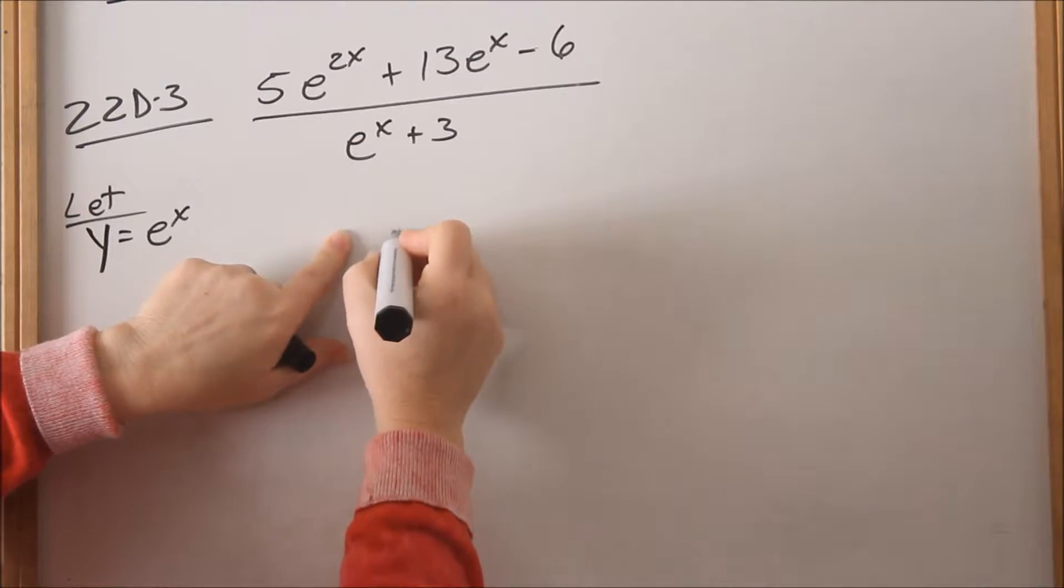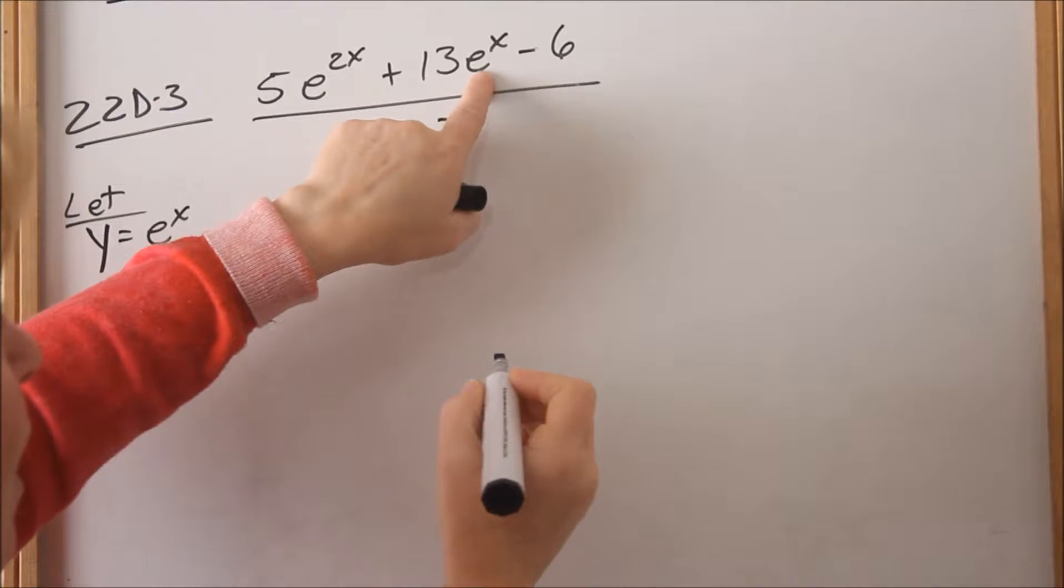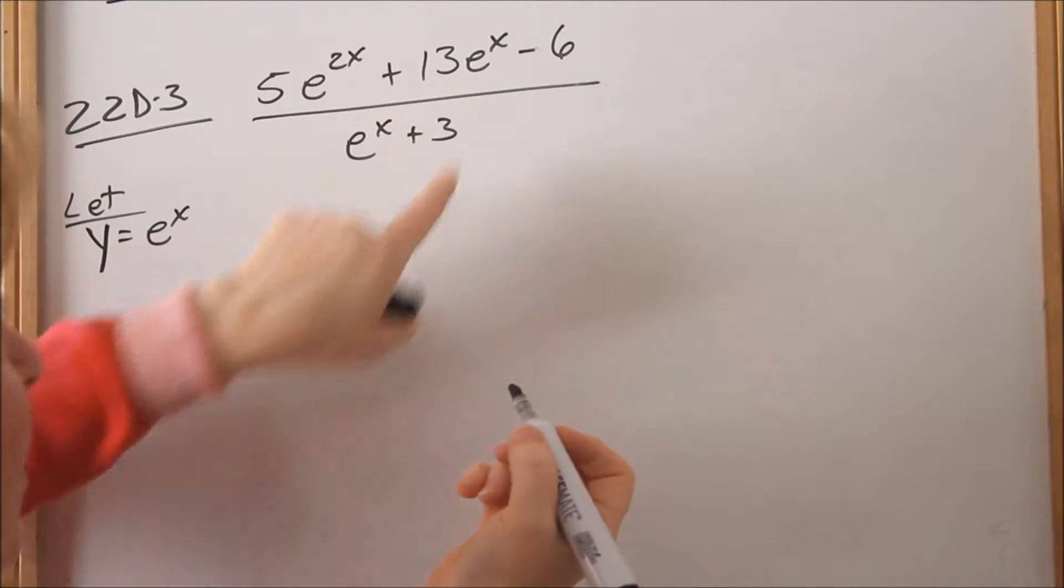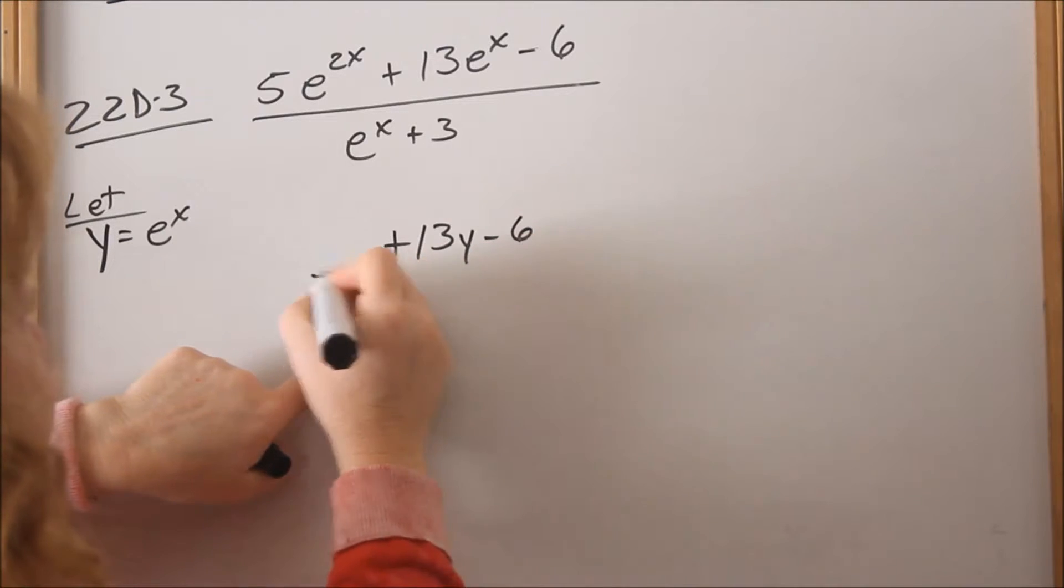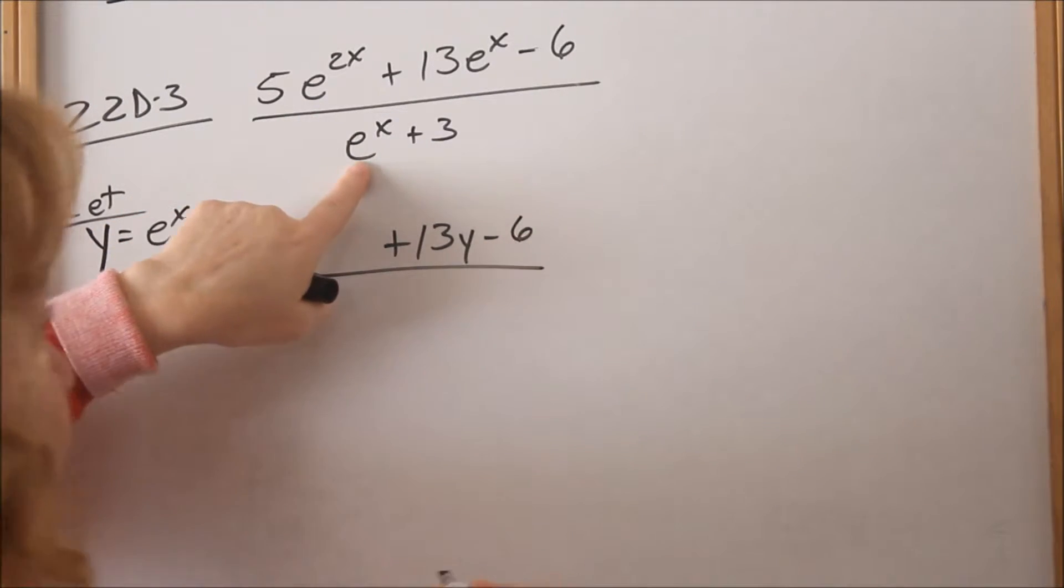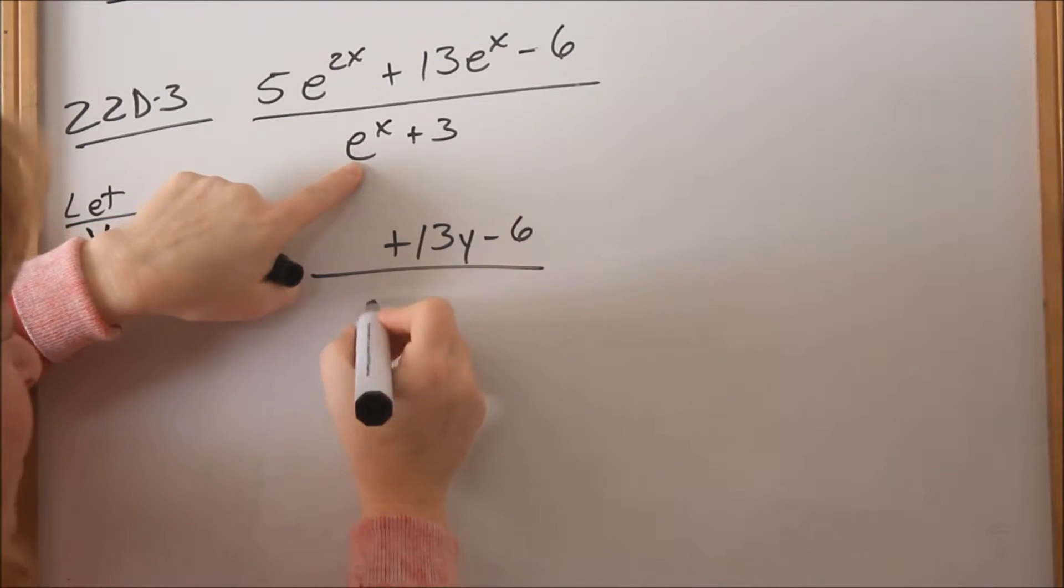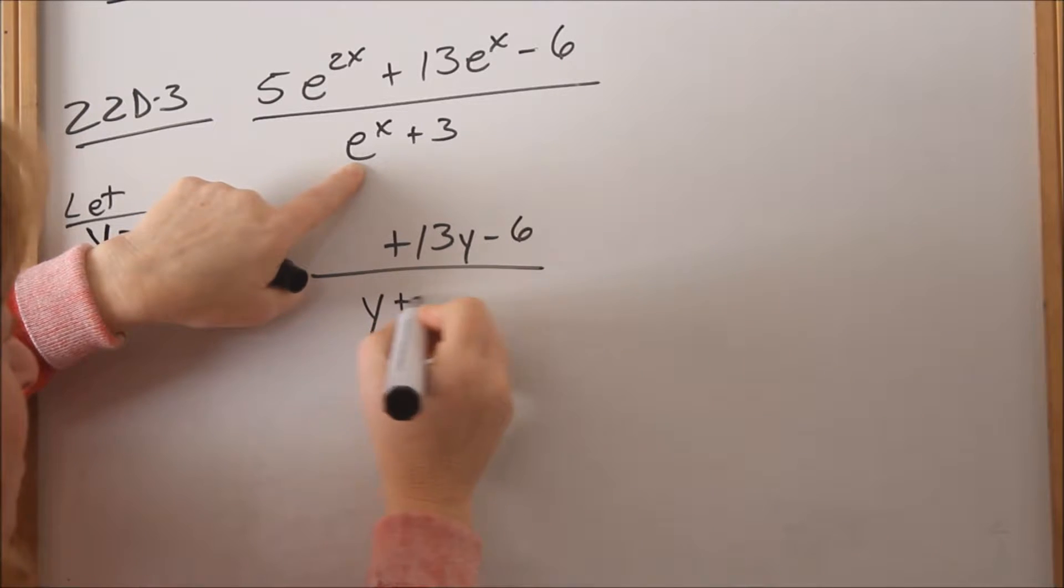You can see that middle term will be 13 times y. There's e^x, so instead of writing e^x, I'm going to write y. I'm going to get to this one in a minute. In the denominator, there's e^x, so I'm putting in y + 3.